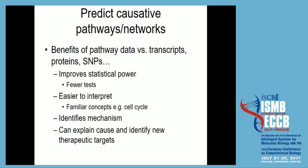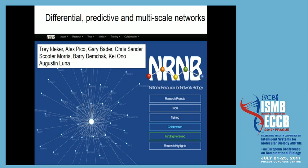This summarizes the benefits of using pathways and networks. As part of the National Resource for Network Biology, led by Trey Ideker and Alex Pico, with Chris Sander also participating, the focus is on using network and cell mechanism information across three major themes: differential, predictive, and multi-scale. Differential is comparing networks, predictive is what I'll focus on today, and multi-scale considers molecules, cells, and atoms at different scales.